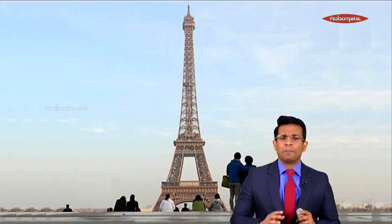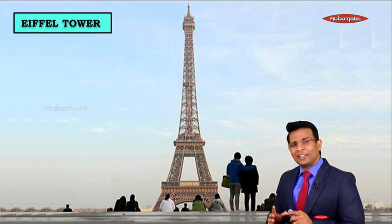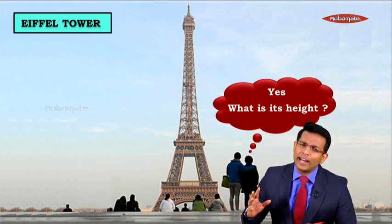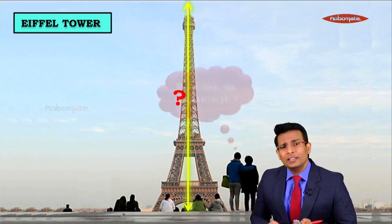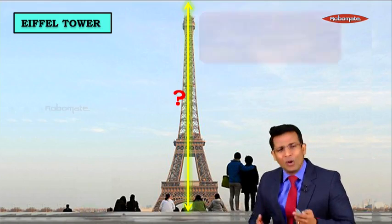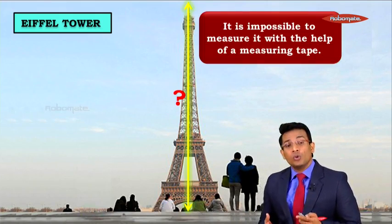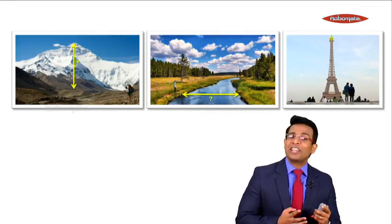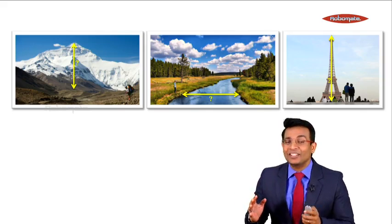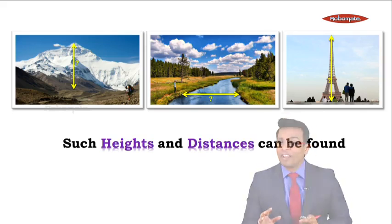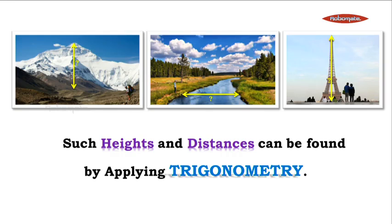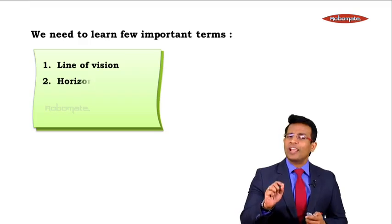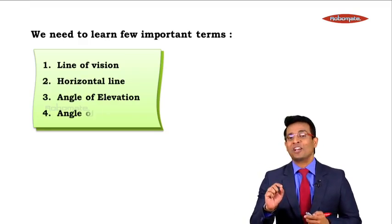Similarly, a couple observing the Eiffel Tower wonders about its height and how to measure it — again, a measuring tape is not possible. In all three cases — the height of Mount Everest, the width of the river, and the height of the Eiffel Tower — such large heights and distances can be found with the help of trigonometry. To learn its application, there are four important terms: line of vision, horizontal line, angle of elevation, and angle of depression.